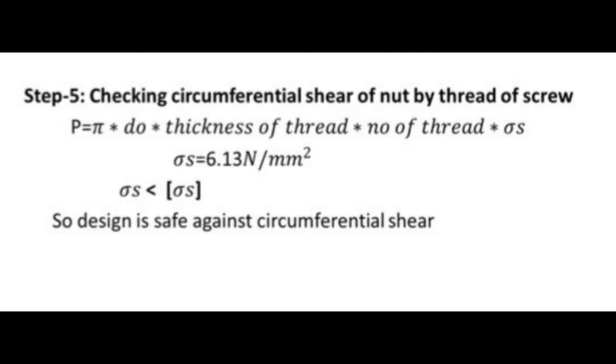Step 5: Checking circumferential shear of nut by thread of screw. P equals pi times D0 times thickness of thread times number of threads times sigma S. Where P equals 10 kN.